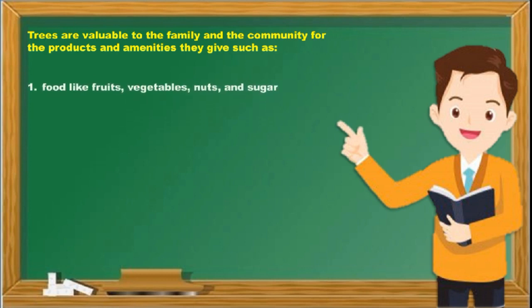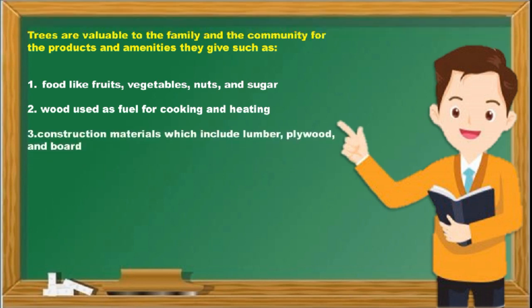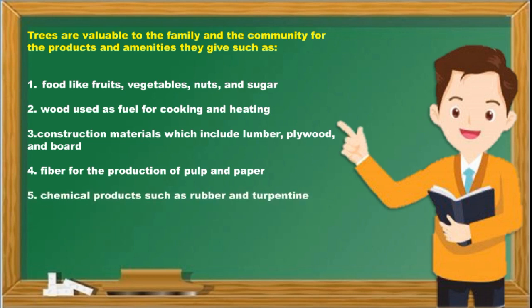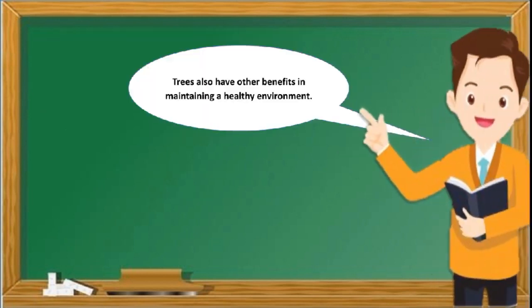The products from trees include: first, food like fruits, vegetables, nuts, and sugar; second, wood used as fuel for cooking and heating; third, construction materials which include lumber, plywood, and board; fourth, fiber for the production of pulp and paper; and fifth, chemical products such as rubber and turpentine. Trees also have other benefits in maintaining a healthy environment.